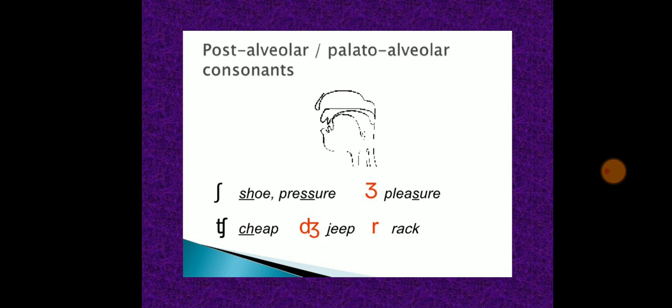Post-alveolar: the tip of the tongue is the active articulator and the part of the roof of the mouth that lies immediately behind the teeth ridge is the passive articulator. The sound represented by the letter R in 'dry' is an example. Palato-alveolar: the tip of the tongue or the tip and blade are active articulators and the teeth ridge is the passive articulator. The initial sounds in 'sheep' and 'jeep' are palato-alveolar sounds.